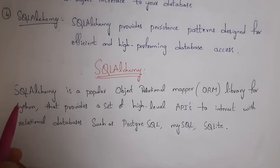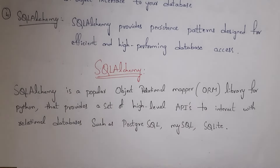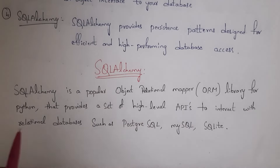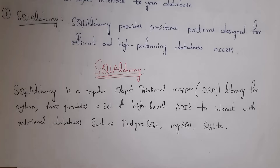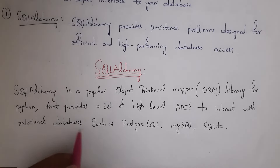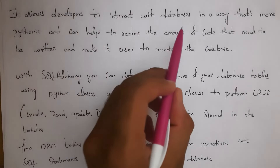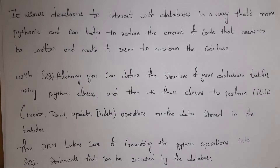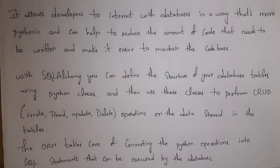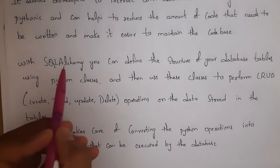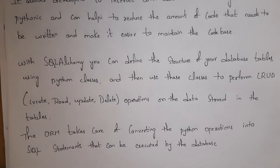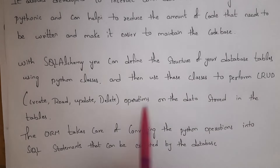SQLAlchemy is a popular object-relational mapper library for Python. It provides a set of high-level APIs to interact with relational databases such as PostgreSQL, MySQL, and SQLite. It allows developers to interact with databases in a more Pythonic way — the code is simple and easier to maintain. With SQLAlchemy you can define the structure of your database tables using Python classes and then use these classes to perform CRUD operations on the data stored in the tables.